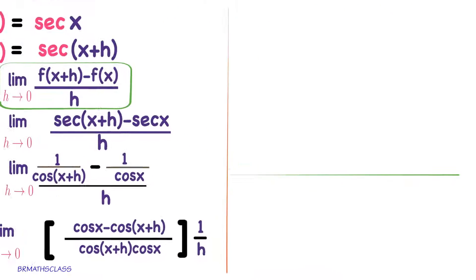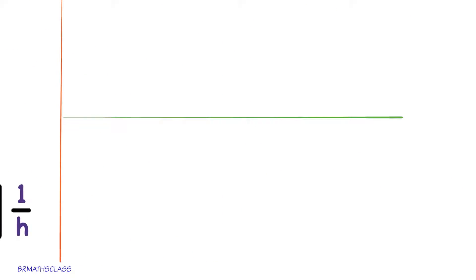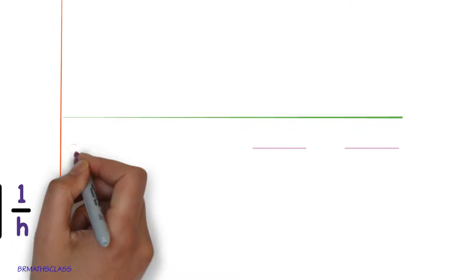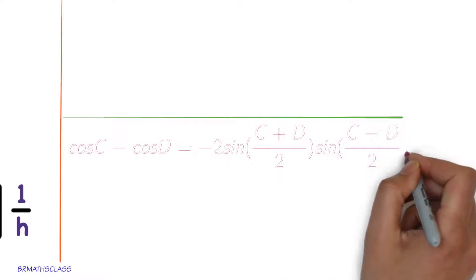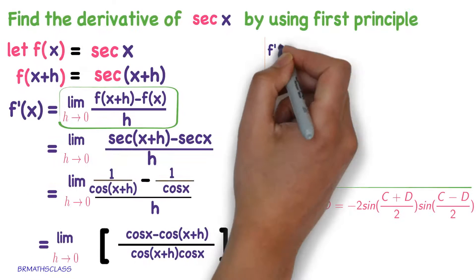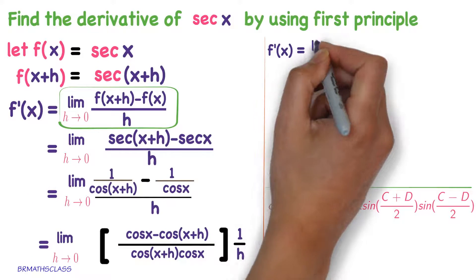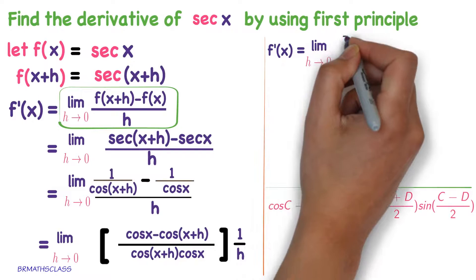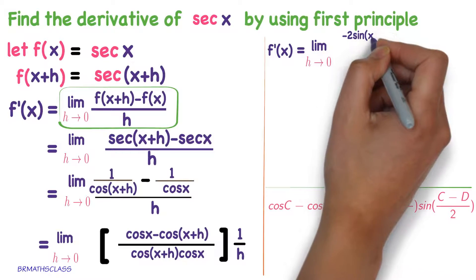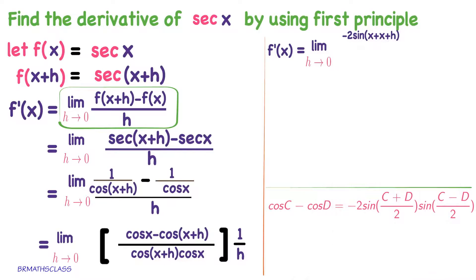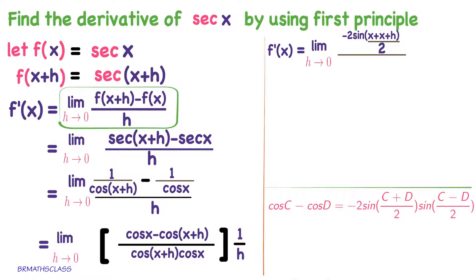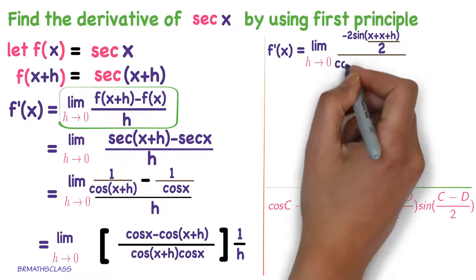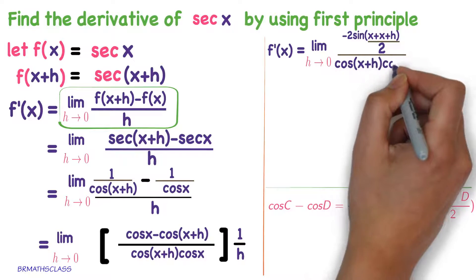Now we know the formula for cos C minus cos D: cos C minus cos D equals minus 2 sin of C plus D by 2, into sin of C minus D by 2. Apply the same formula here with limit h tends to 0. C is x and D is x plus h, divided by the denominator cos of x plus h into cos x.